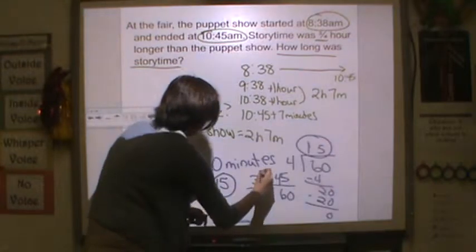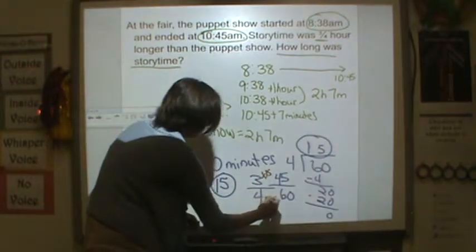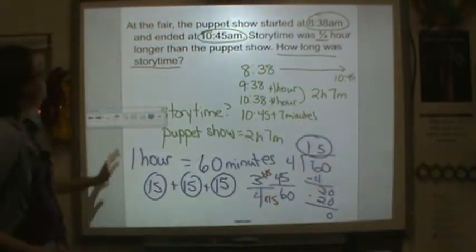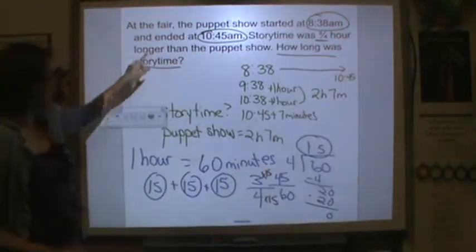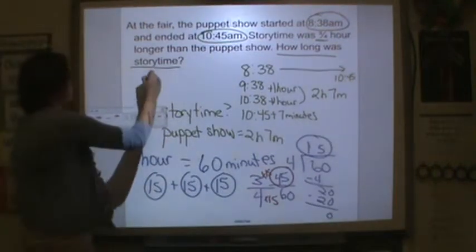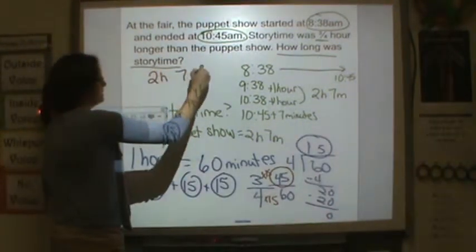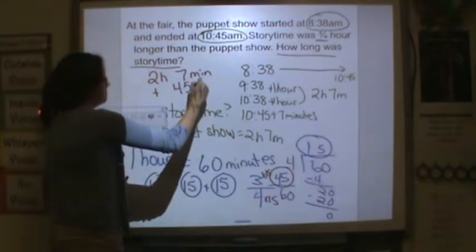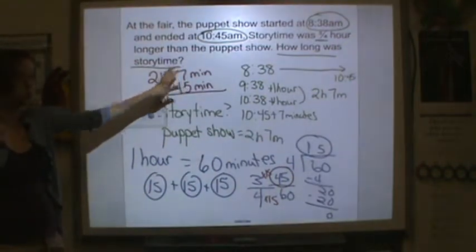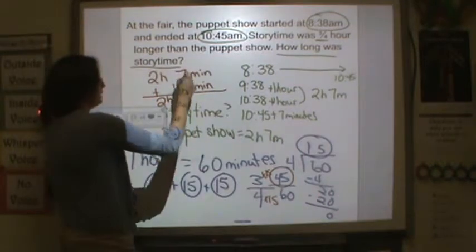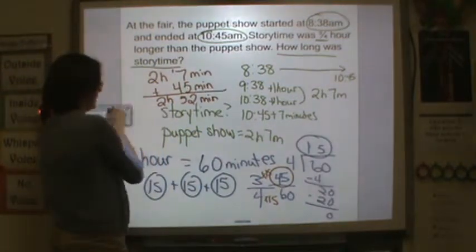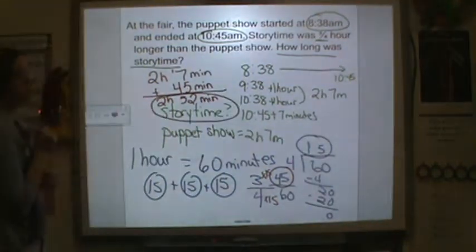Now, if you were to do a quick review — multiply by 15, multiply by 15 — that's an equivalent fraction. So it says story time is three quarters of an hour longer than the puppet show. So I need to add 45 minutes to the puppet show. So I have two hours and seven minutes plus 45 minutes. My hours are going to stay the same because 45 and seven does not equal 60, so I don't regroup an hour. I have 5 and 7, so I have 52 minutes. Story time was two hours and 52 minutes.